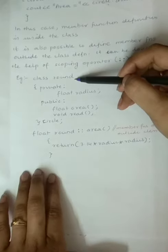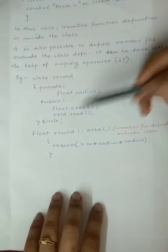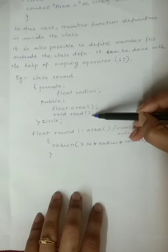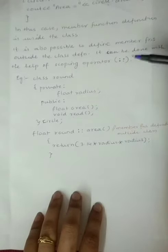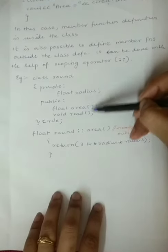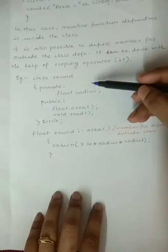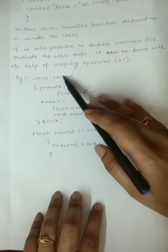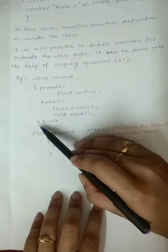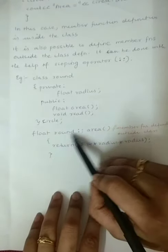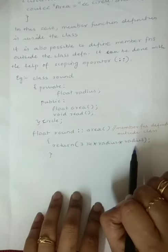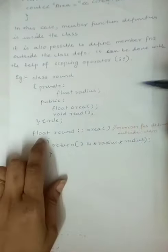The difference here is that I have not defined `area` and `read` inside class `round`. Instead, I first define the class `round` and its object `circle`, and after closing the class, I define the `area` function outside.